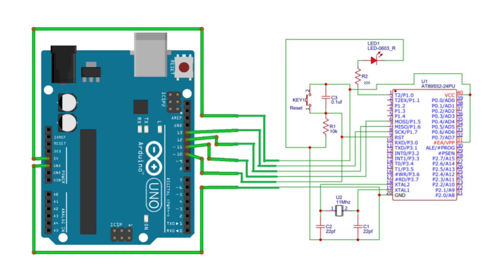Connect the 5V output of the Arduino Uno board to the VCC pin of the AT89S52 microcontroller. Connect the GND pin of the Arduino board to the GND pin of the AT89S52 microcontroller. Connect digital pin 11 of the Arduino Uno to the MOSI pin, and digital pin 12 to the MISO pin of the AT89S52 microcontroller.